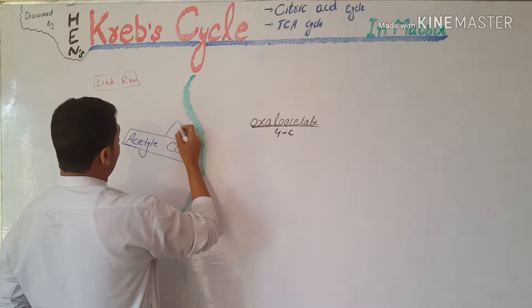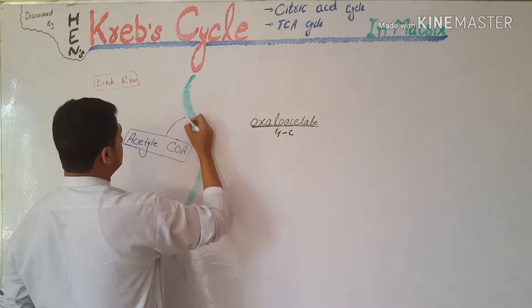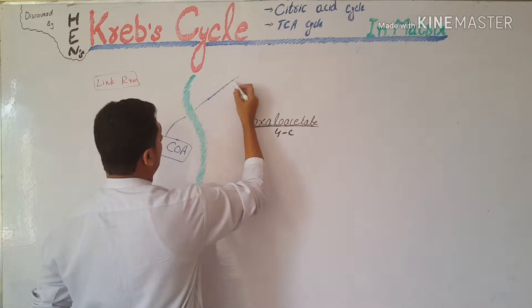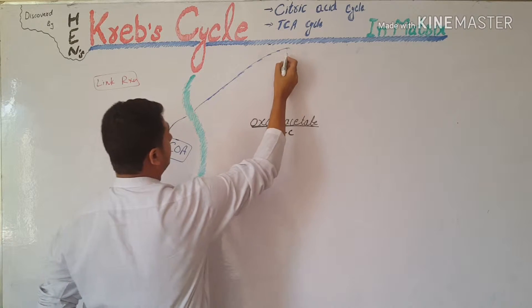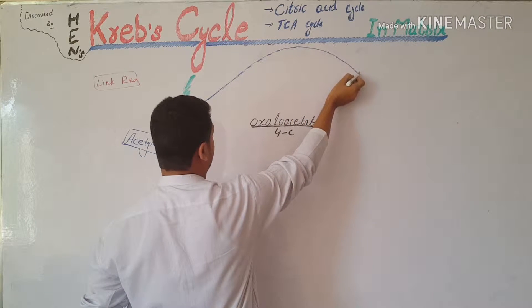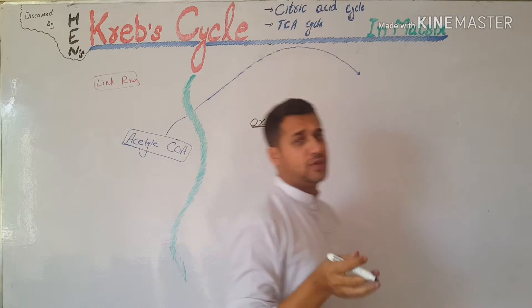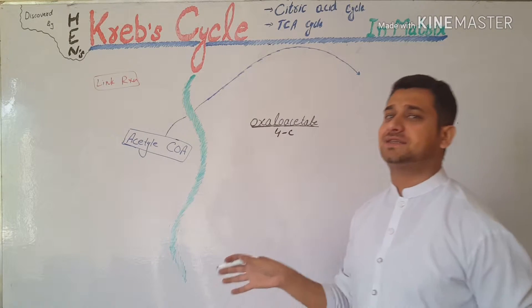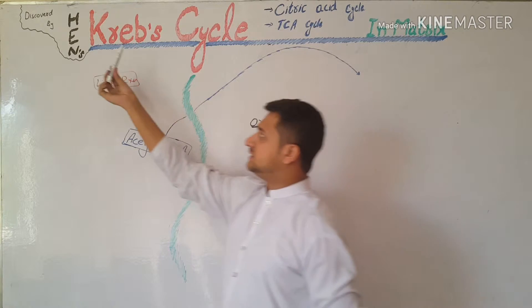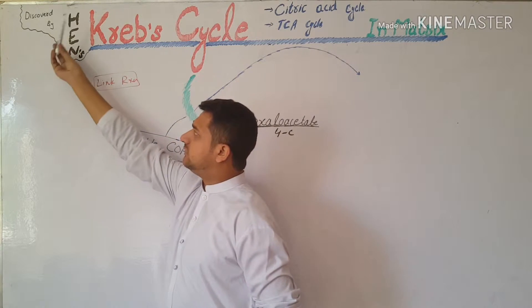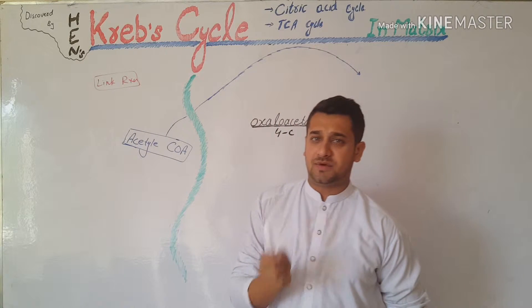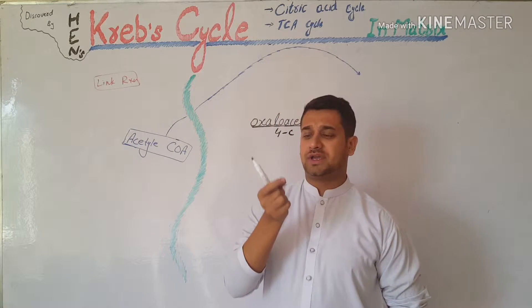The Krebs cycle starts when acetyl coenzyme A enters into the mitochondrial matrix. A question arises: why is this called the Krebs cycle? This process was discovered by Hans Krebs, and this is the name of the scientist. So it is called the Krebs cycle.